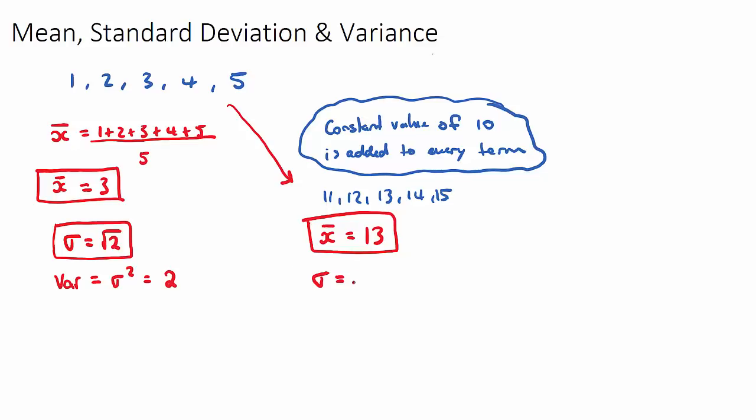So this standard deviation does not change when a constant is added to a data set. And therefore the variance also won't change. The variance will just be 2. So that's the first rule of thumb there. If a constant is added, the mean is added by the constant, but the standard deviation and the variance, which is the spread, that does not change.